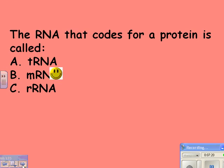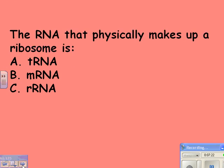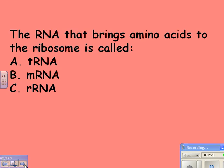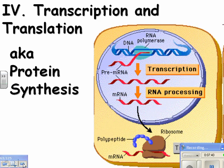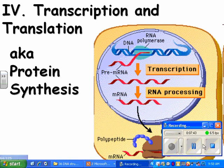The RNA that codes for a protein is called messenger RNA. The RNA that physically makes up the ribosome is ribosomal RNA. The RNA that brings amino acids to the ribosome is called transfer RNA — like a truck. The RNA that looks like a cloverleaf is also called transfer RNA.